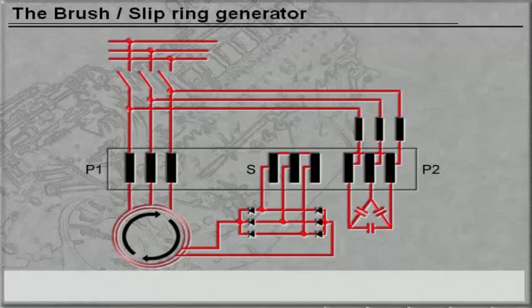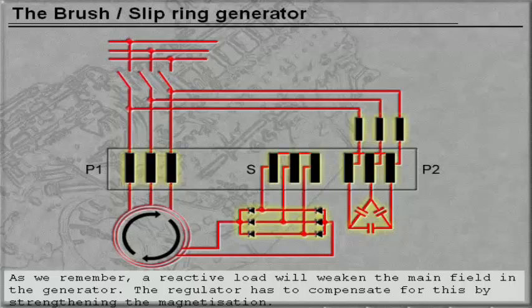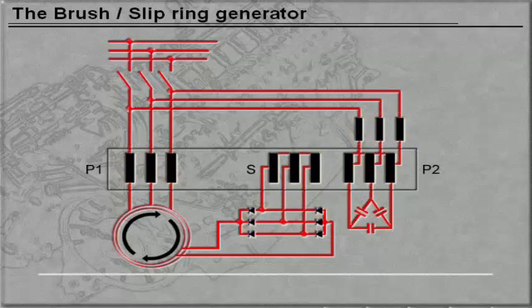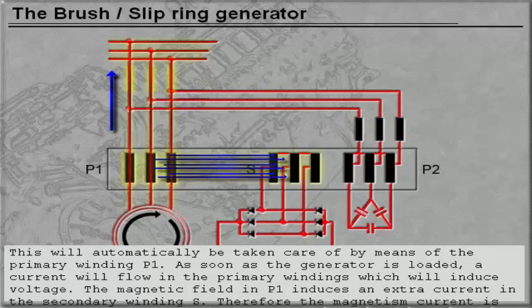As we remember, a reactive load will weaken the main field in the generator. The regulator has to compensate for this by strengthening the magnetization. This will automatically be taken care of by means of the primary winding P1. As soon as the generator is loaded, a current will flow in the primary windings which will induce voltage. The magnetic field in P1 induces an extra current in the secondary winding S. Therefore, the magnetism current is load-dependent.